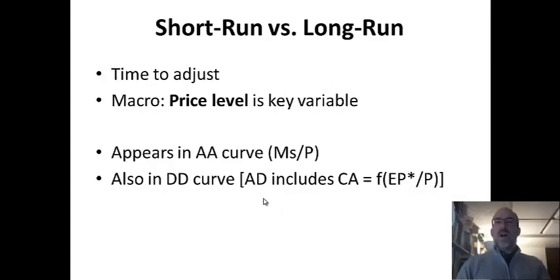Let's review the short run and the long run. In macroeconomics, the short run is time to adjust for all variables. In macro, the price level is the thing that adjusts that makes the short run different from the long run. Eventually, prices adjust and rise, and sometimes that has an effect that counteracts the temporary effect of a certain policy. Prices appear in both curves. In the AA curve, part of it is the money market, so MS over P, or real money supply. If prices go up, real money supply goes down.